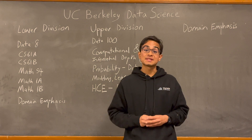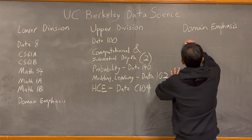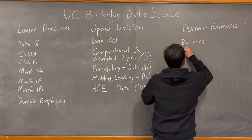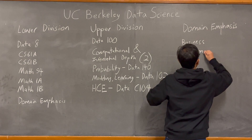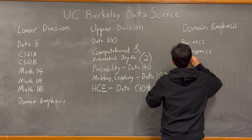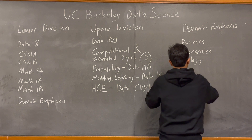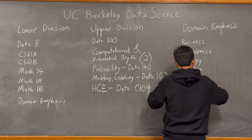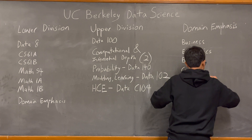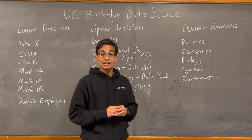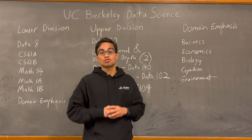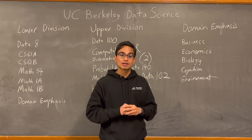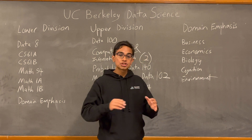Some examples of Domain Emphasis include Business and Industrial Analytics, Economics, Biology, Cognition, Environment, and many more. There is a long list of courses available to help you satisfy this requirement, and it's linked in the description below. For each of these specializations, generally speaking, three courses are required: one of which will be a lower division course, and two of which will be upper division courses.